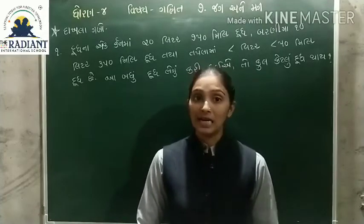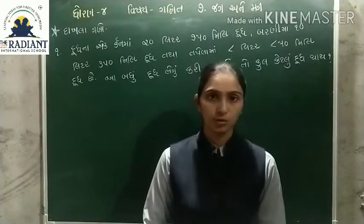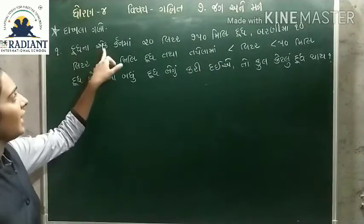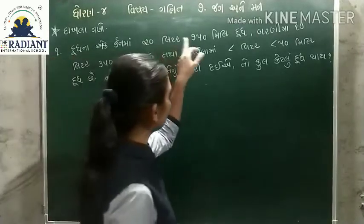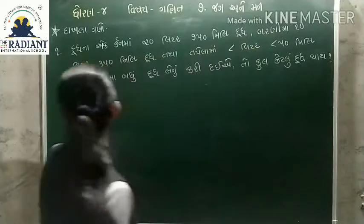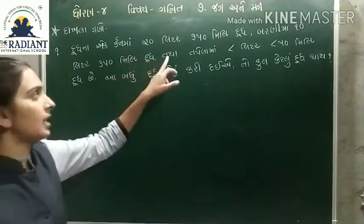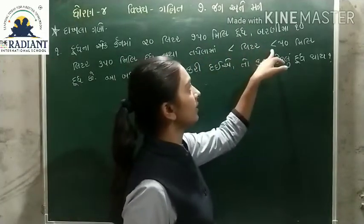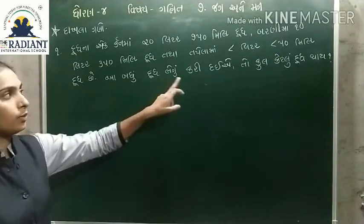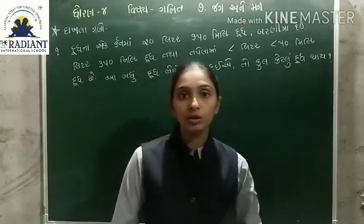તો આજે આપણે આ વીડિયો મા વ્યવારૂ ડાખલાઓ શીખશો. પૈલો ડાખલો: દૂધ ના એક કૈન મા 20 લીટર 680 મિલી દૂધ, બરણી મા 10 લીટર 380 મિલી દૂધ, તથા તપેલા મા 8 લીટર 880 મિલી દૂધ છે. આ બધું દૂધ ભેગું કરી દઈએ, તો કૂલ કેટલું દૂધ થાય?